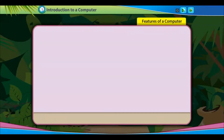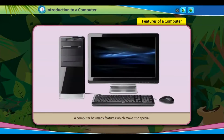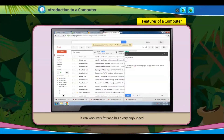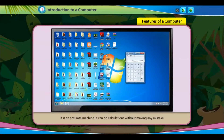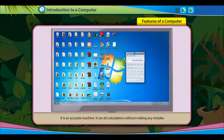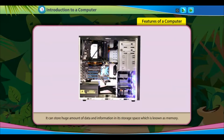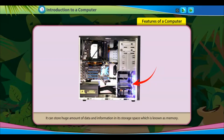Features of a Computer. A computer has many features which make it so special. It can work very fast and has a very high speed. It is an accurate machine — it can do calculations without making any mistake. It can store a huge amount of data and information in its storage space, which is known as memory.